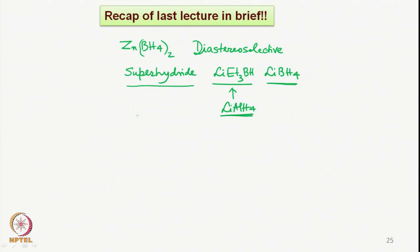Then towards the end we looked at the selectrides. In the case of selectrides, we saw three different types: L-selectride, K-selectride, and N-selectride. The K- and N-selectrides are not as popular as L-selectride because lithium is a stronger chelating ion than potassium and sodium.